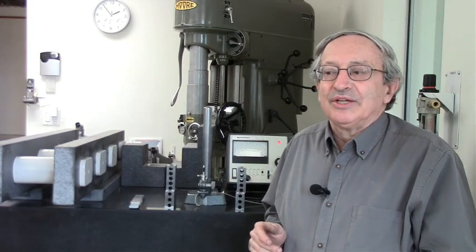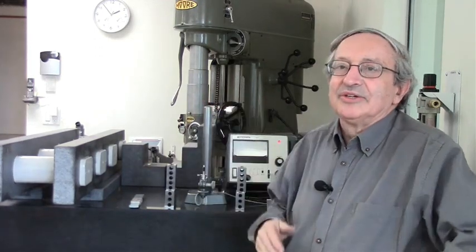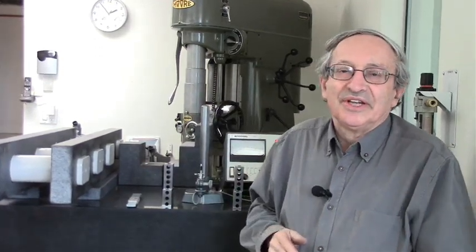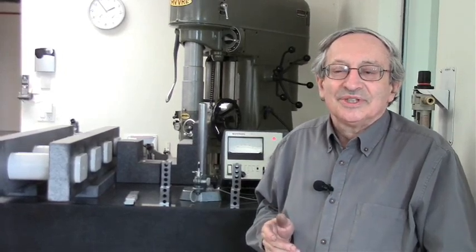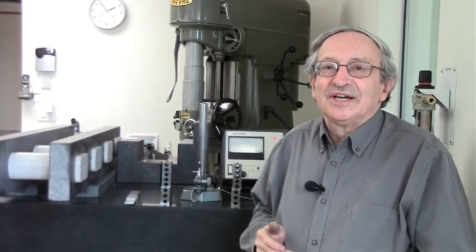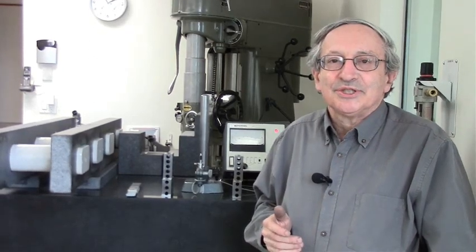Another example, if you look at a bed of a lathe, the bed of a lathe is maybe this thick cast iron or could support easily 10 tons, but the work piece in the lathe is only 10 kilo. So it's over-designed 1,000x because the stiffness is what determines the dimension, not the strength.